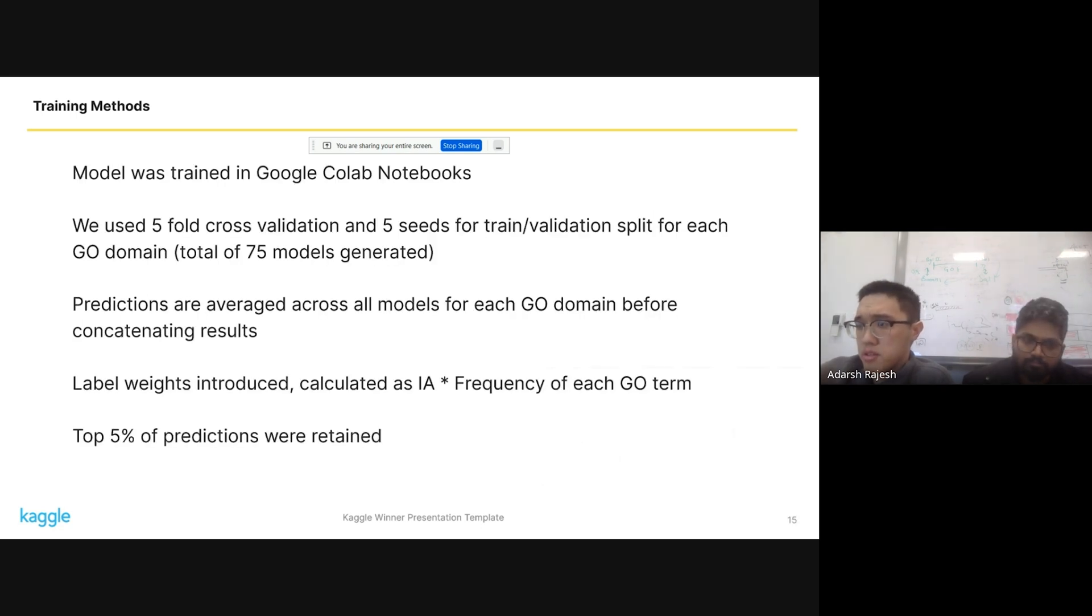So a bit more detail is that we train our models in Google Colab. We use five-fold cross-validation, and we actually use five different seeds for training validation split. So for each GO domain, we did all of these. So that's 25 models for each GO domain, 75 models in total. We averaged predictions for each GO domain across all the models with the weights were identical for each model. And then we concatenated the results before submission.